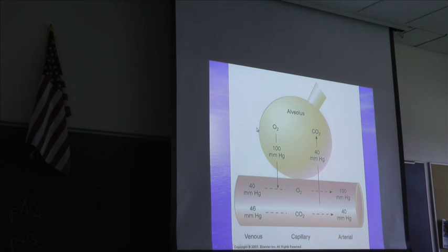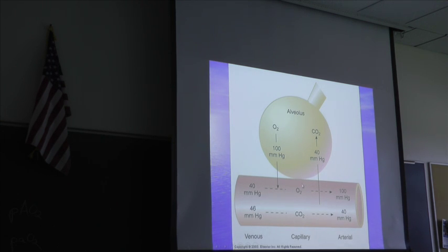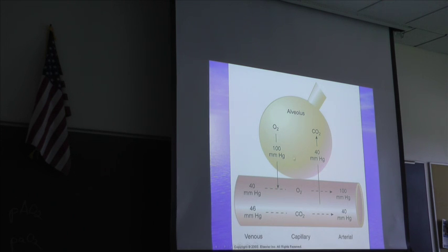This picture shows normal partial pressures. In the alveolus, the partial pressure of oxygen is 100 mmHg. The venous blood coming towards the alveolus has a partial pressure of 40 mmHg, so oxygen diffuses from high to low pressure into the blood. Carbon dioxide in the vein is 46 mmHg, and the alveolus has 40 mmHg — so CO2 diffuses out, and arterial blood ends up with 40 mmHg CO2.